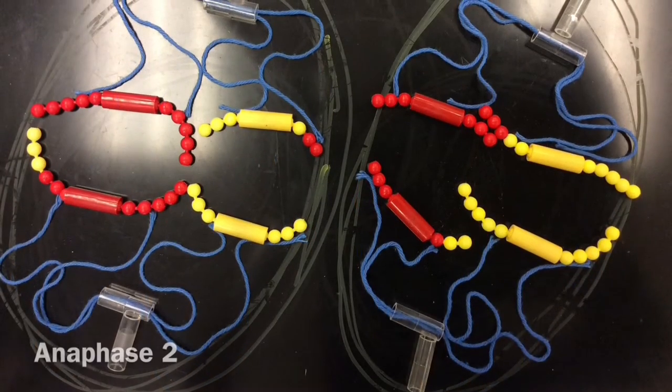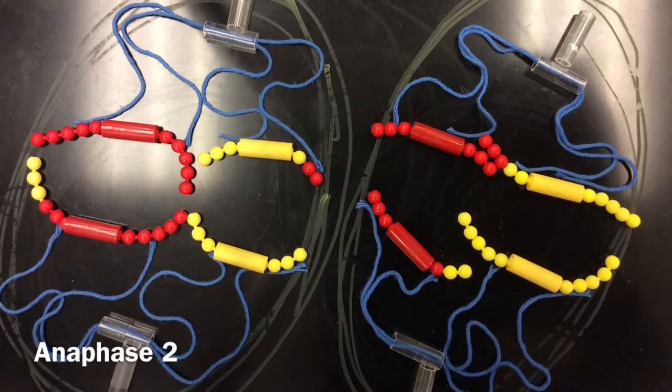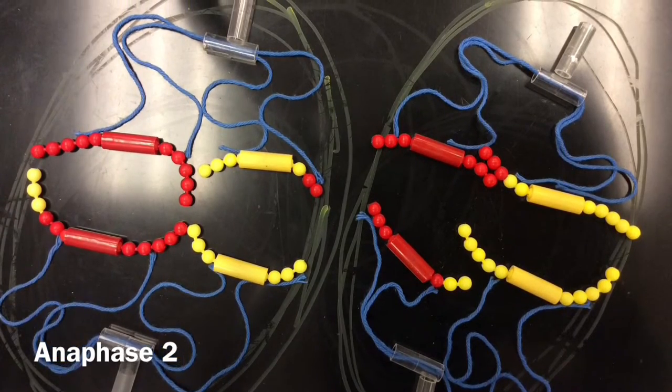In anaphase II, the sister chromatids separate into chromosomes as spindle fibers pull them to each of the poles.